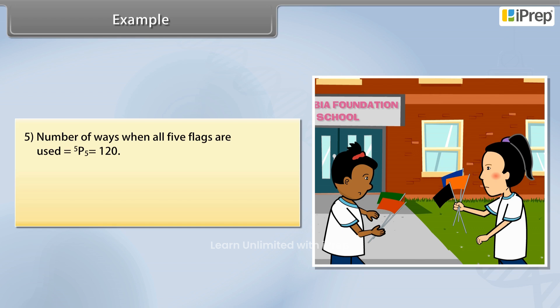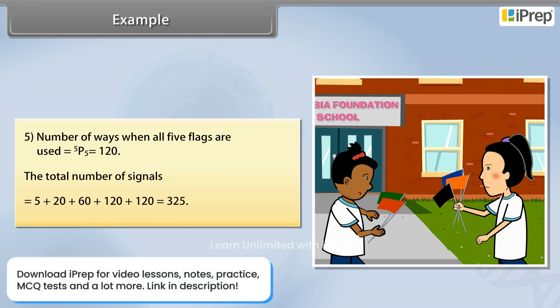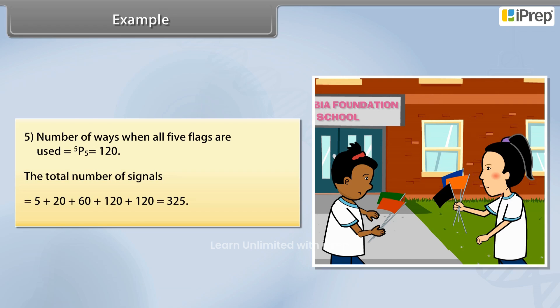equal to 120. The total number of signals is equal to 5 + 20 + 60 + 120 + 120